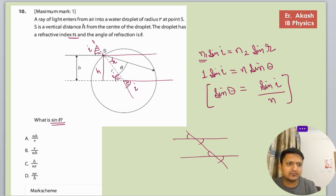We will concentrate on this triangle. This is i, this is h, and this is r. Sine i will be - you know sine theta is perpendicular upon hypotenuse - so sine i is h upon r.